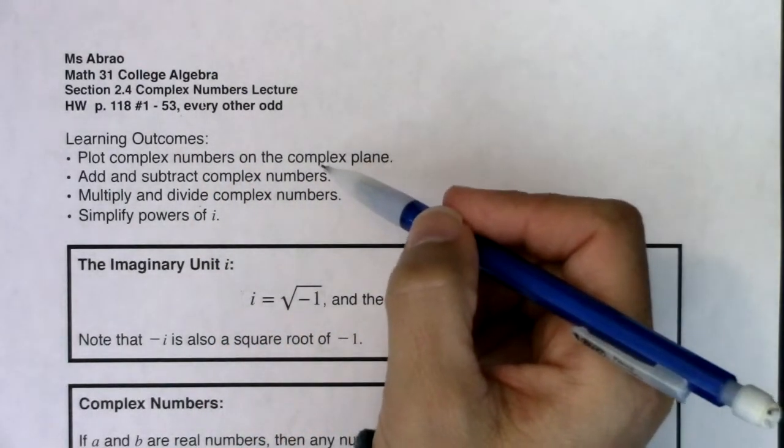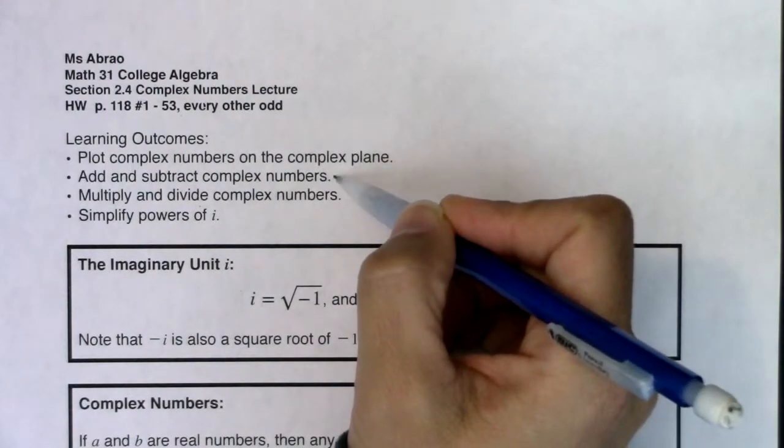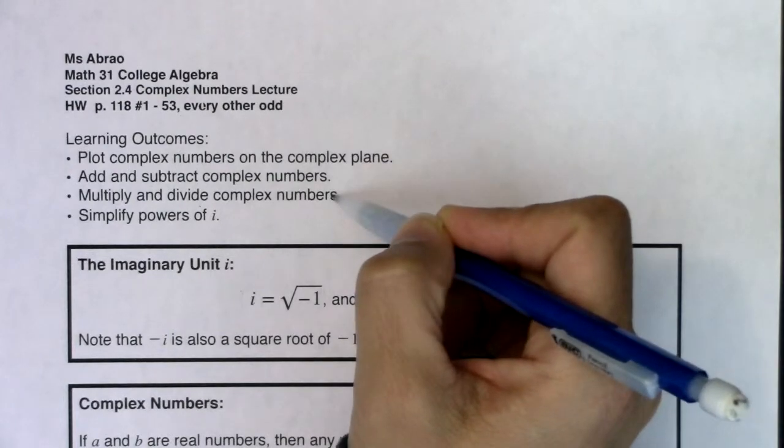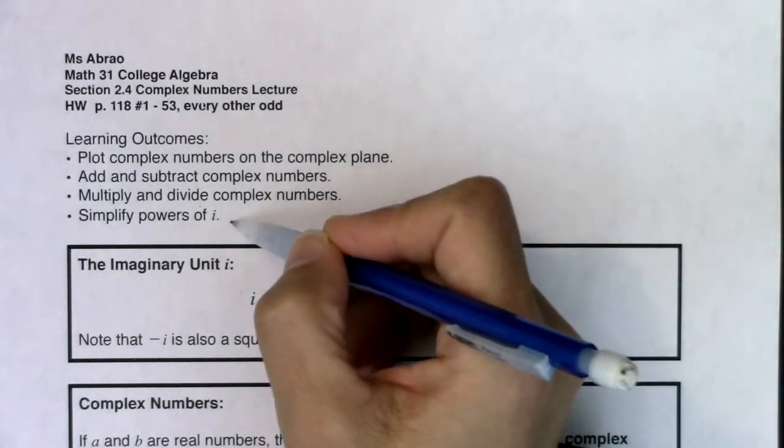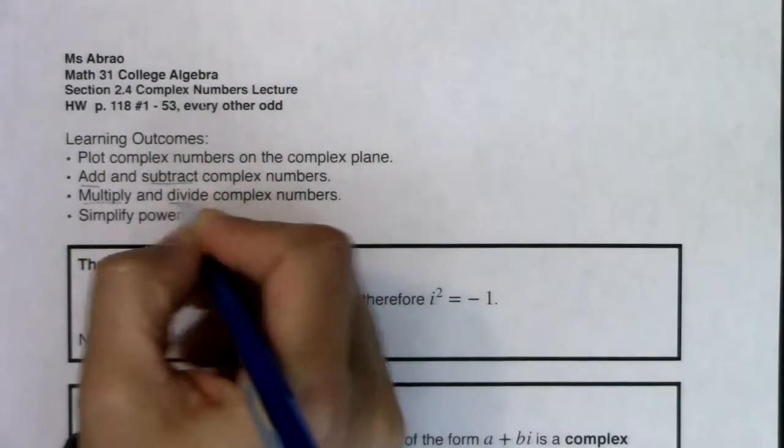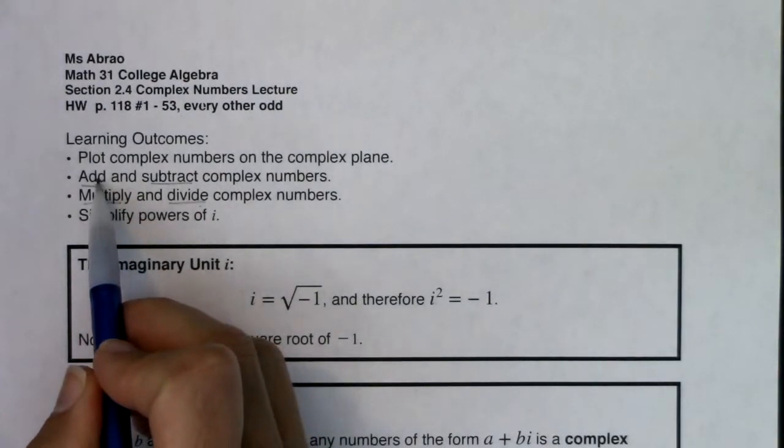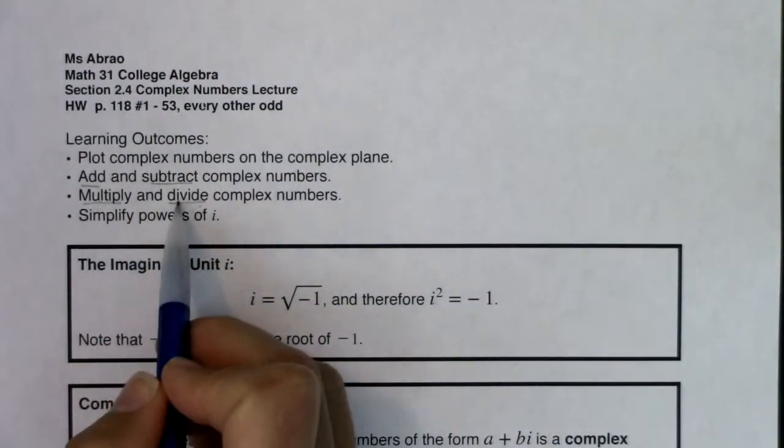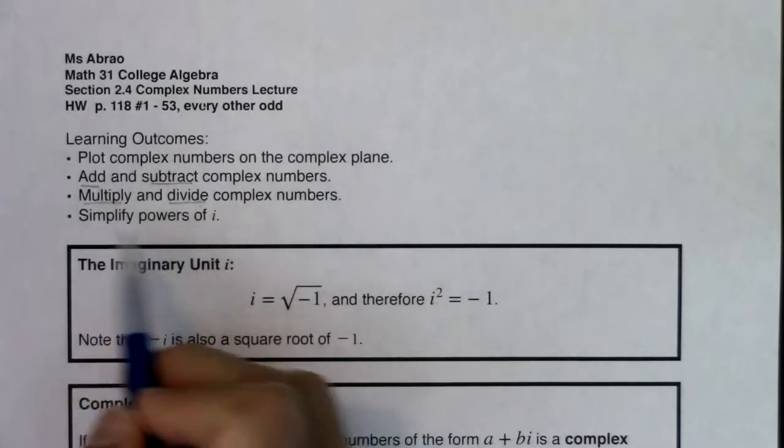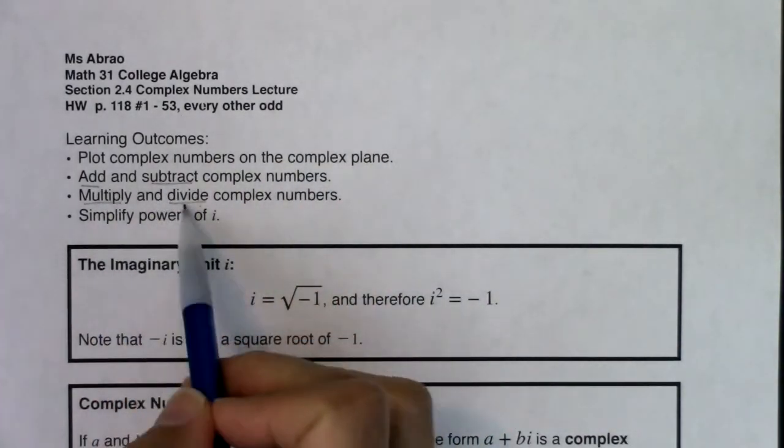And our learning outcomes for this section are that we should be able to plot complex numbers on the complex plane, add and subtract complex numbers, multiply and divide complex numbers, and simplify powers of i. So when you hear me talk about learning outcomes two and three, I want you to see that our four math operations are in here: addition, subtraction, multiplication, and division. And we had talked about these four operations in a previous section. I just want you to see them popping up again.